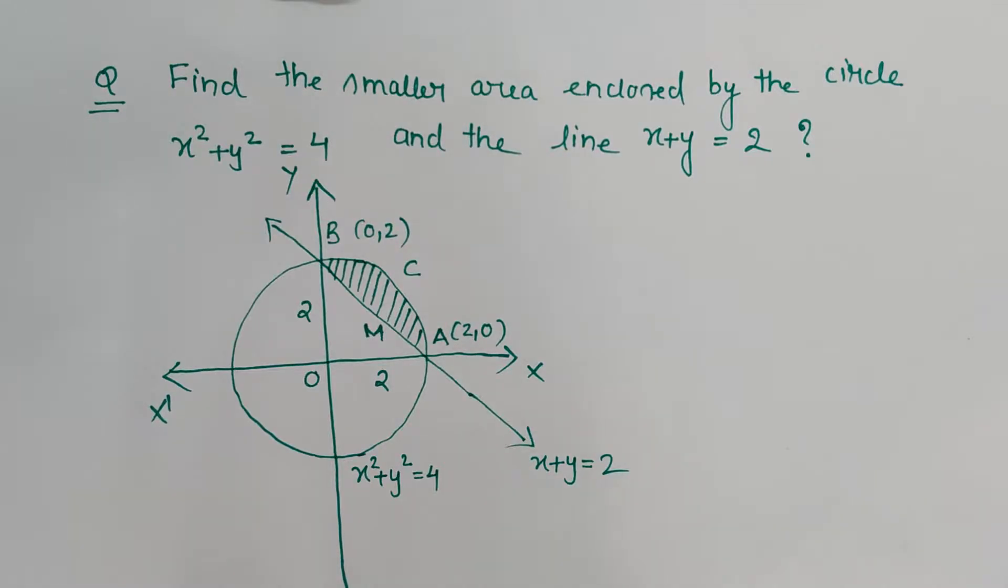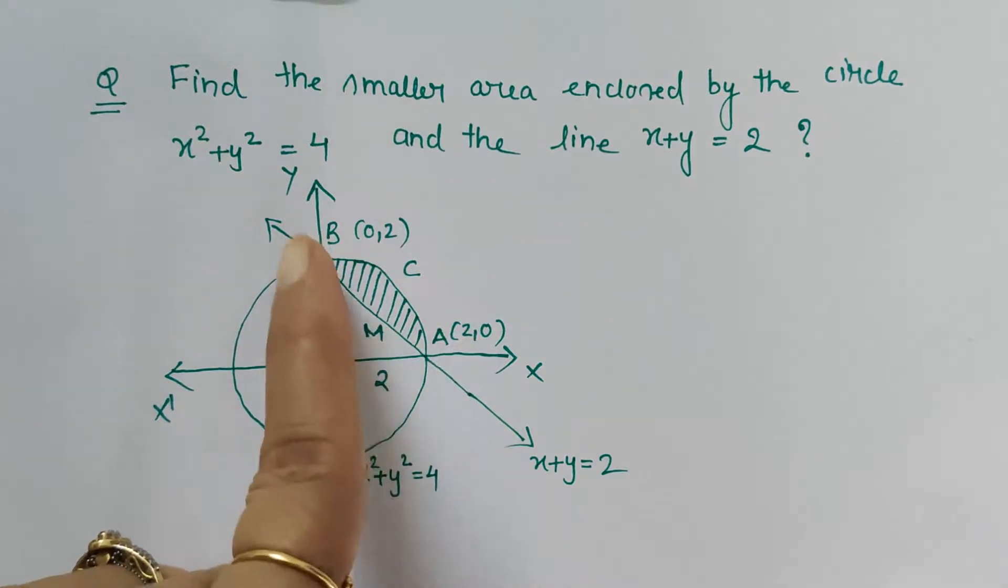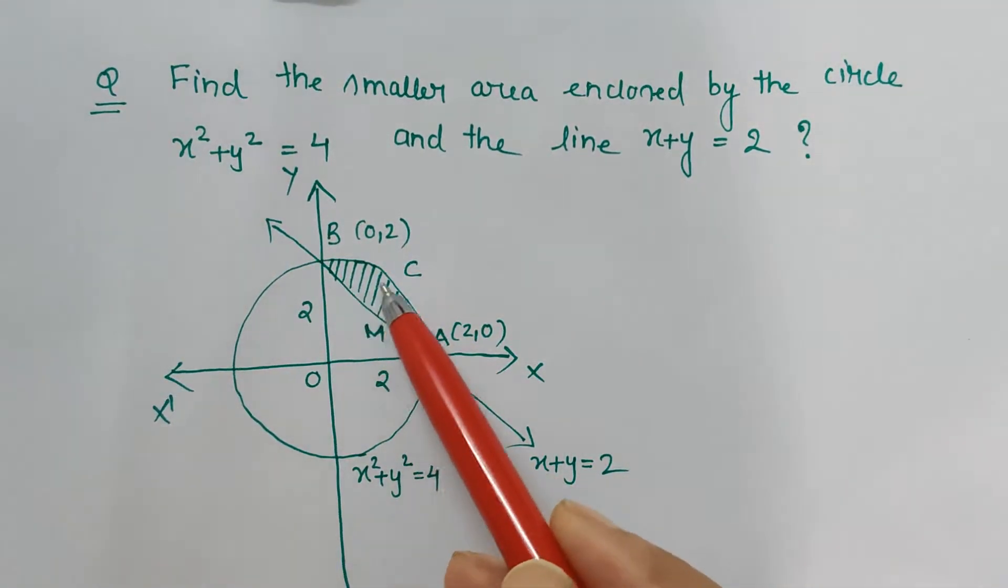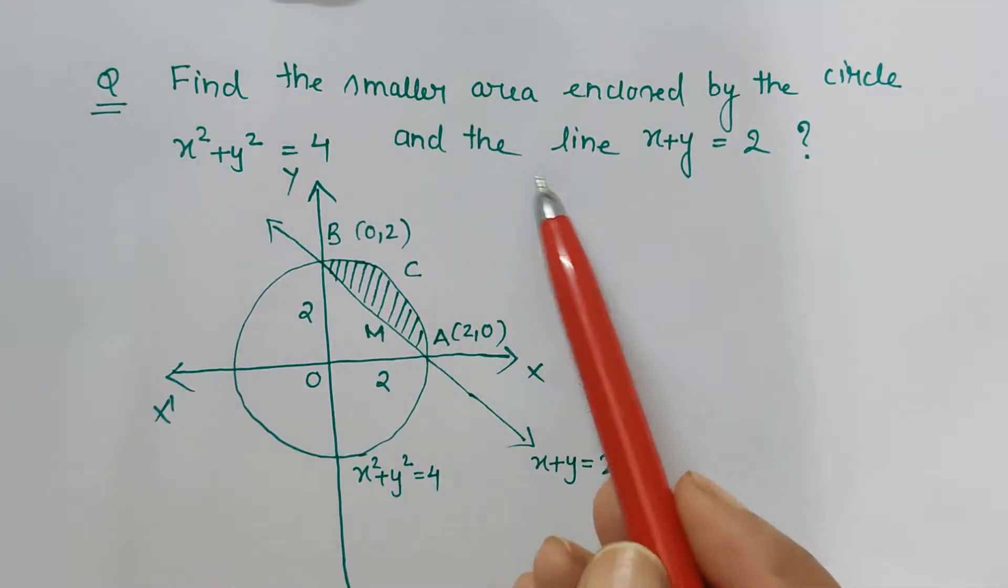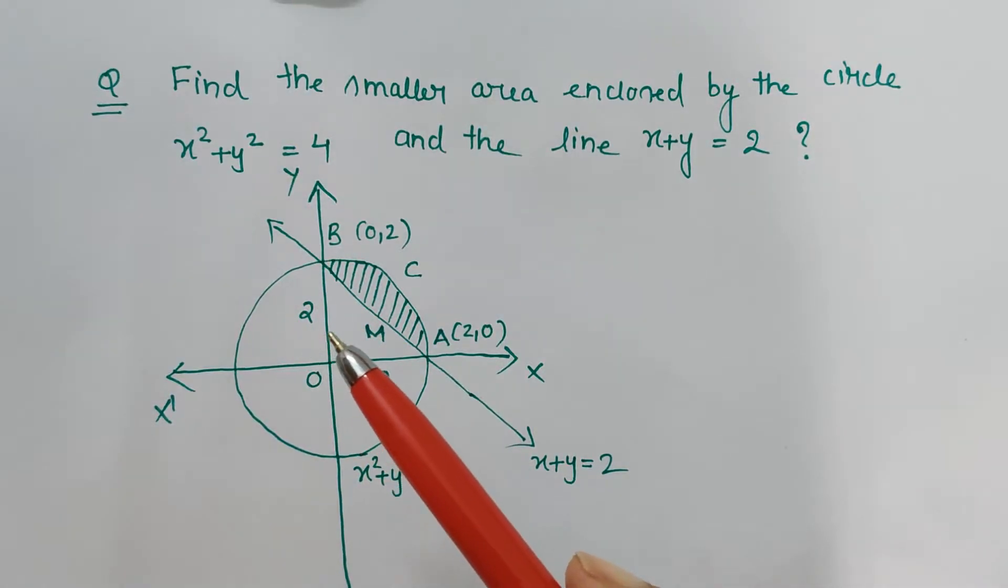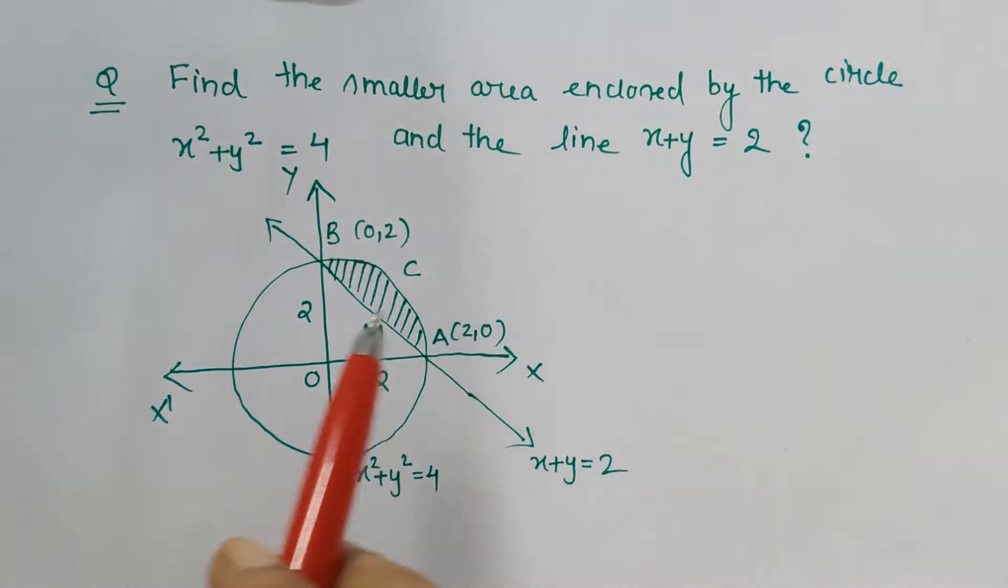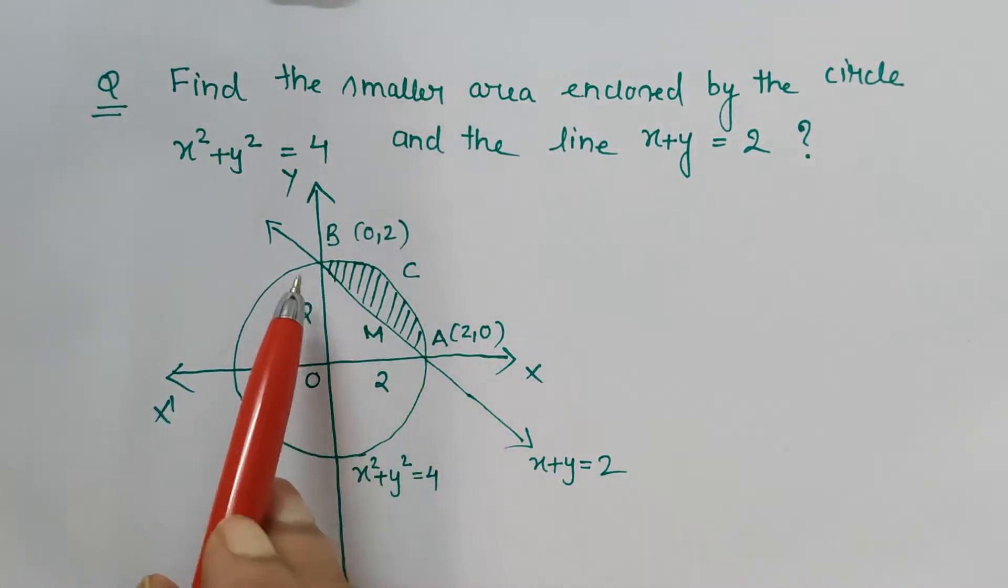Hello friends, in this video I'm going to explain how to find the area bounded by a circle and a straight line. We have to find the smaller area as per the question. As I explained in my previous video, in such scenarios we calculate the area of the upper curve minus the area of the curve which is below.